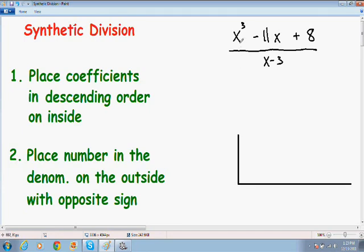So notice how we have an x cubed, and we have an x, and then we have an 8 constant. You have to place the coefficients in descending order. So our greatest power is a 3, or our greatest exponent is a 3, and the coefficient in front of that x cubed is a 1. So since there is a coefficient of 1 in front of the x cubed, I'm going to put a 1 inside the box.